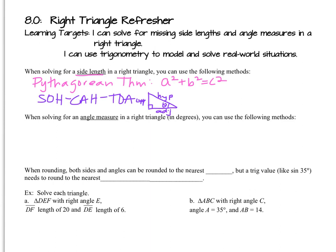We could apply the Pythagorean theorem if we know two of the three sides, or we could use SOHCAHTOA if we know an angle and at least one other side. Those would be our options for finding side length.